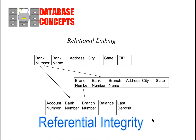Looking at relational linking and referential integrity — as you can see in the example here — you can have keys such as bank number as a primary key, and branch number as a primary key. Bank number then becomes a foreign key in another table, but it relates back to that primary key. Account number is a primary key, but you can see it has two different foreign keys, so it can relate to both other tables. With a hierarchical database you would need all three of these in order, but with relational, you can get to different data without having to go straight through on a top-down method.